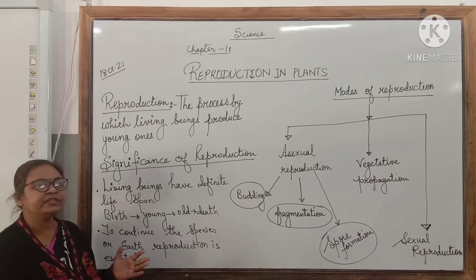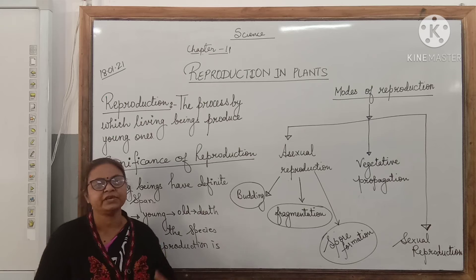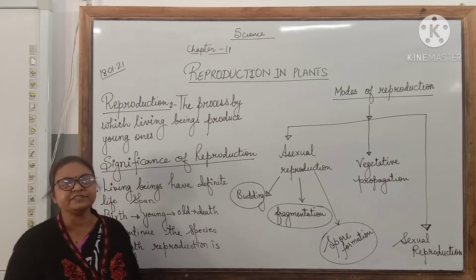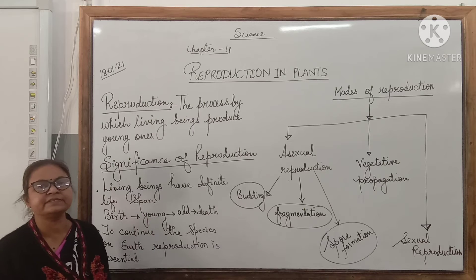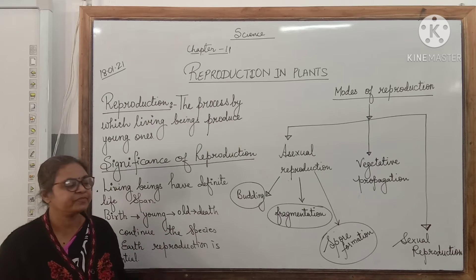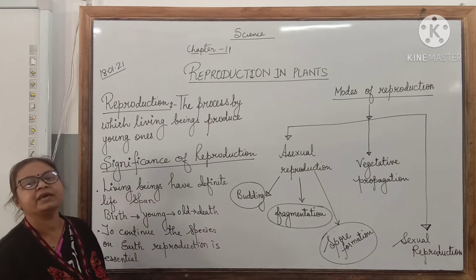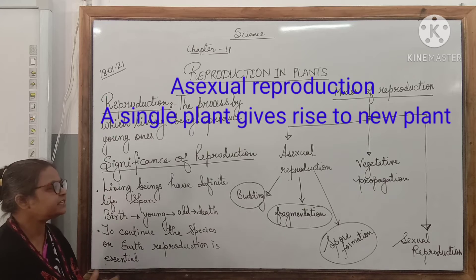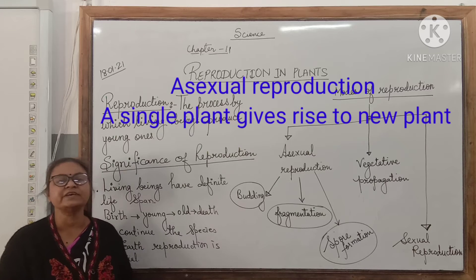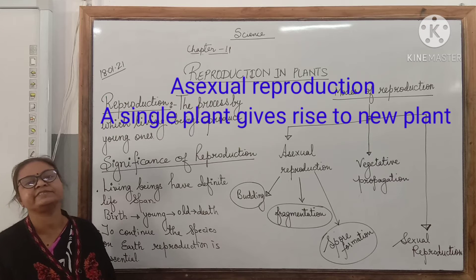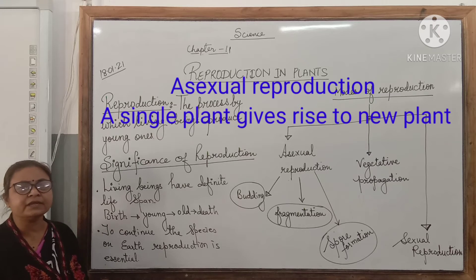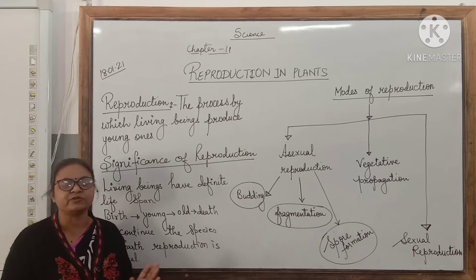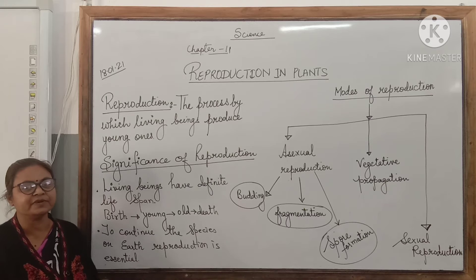There are various modes of reproduction. In this chapter, we are going to focus on reproduction in plants. Plants reproduce mainly by three methods: asexual reproduction, vegetative propagation, and sexual reproduction. Asexual reproduction is the process in which a single plant or single parent produces young ones. There is no involvement of reproductive cells — special gametes or reproductive cells are not required.